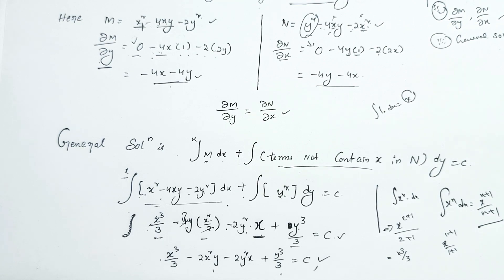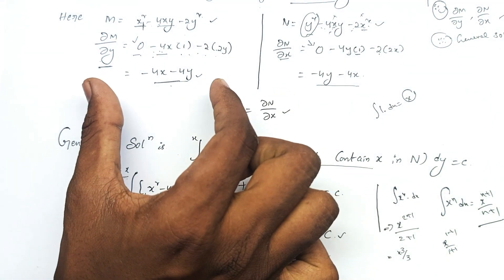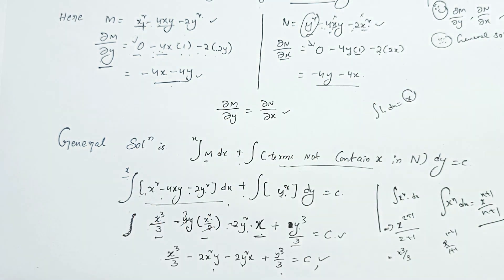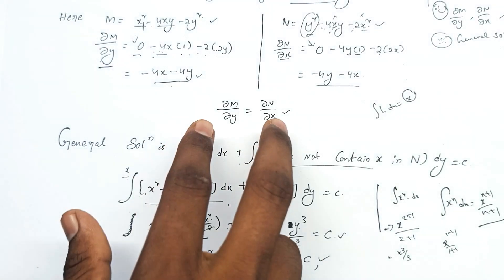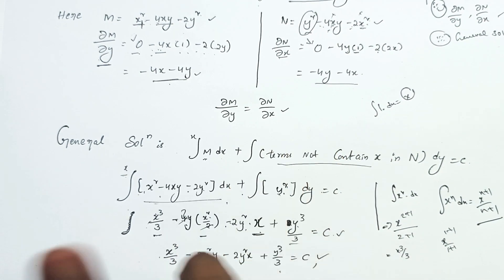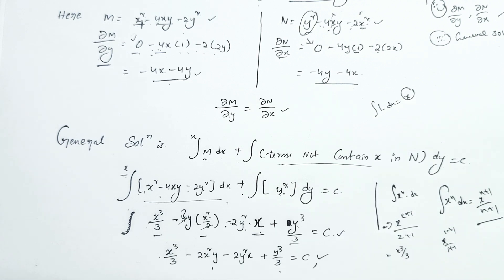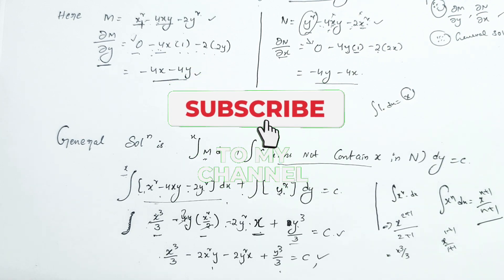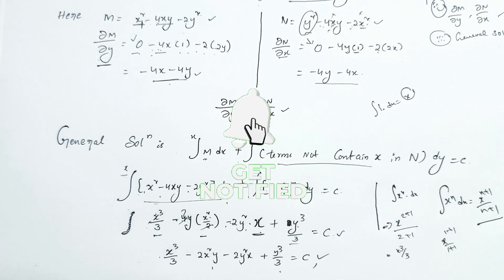In summary: first compute ∂M/∂y, then compute ∂N/∂x. If they are equal, the equation is an exact differential equation — that is the first method. Then find the general solution. If you want to take notes, you can download them or leave a comment in the comment section. Please like this channel, subscribe and support. Thank you.